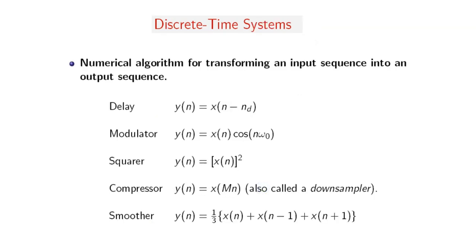Discrete time systems are used to perform digital signal processing on discrete time signals. The numerical algorithms for transforming an input sequence into an output sequence define a discrete time system. Examples of discrete time systems include delay, modulator, squarer, compressor, smoother, and others — all systems with an input and an output. For example, for the delay system, the input is X of N minus D where D is the delay, and the output is Y of N. Every system will have different outputs based on the system itself, characterized by what we call the impulse response or transfer function of the system.